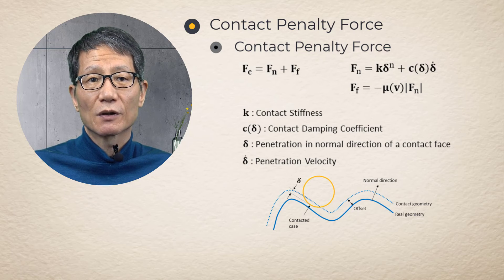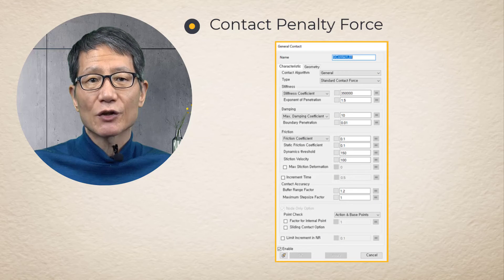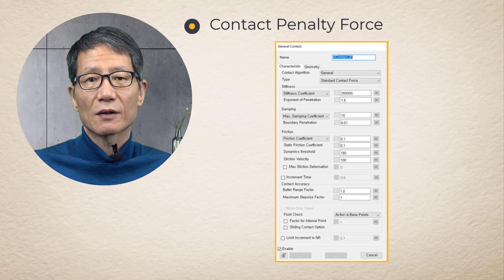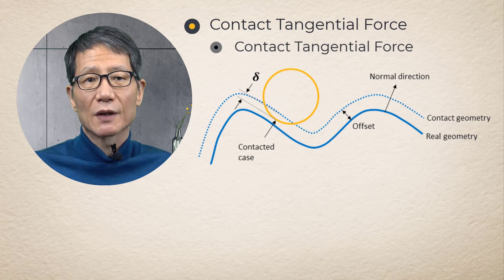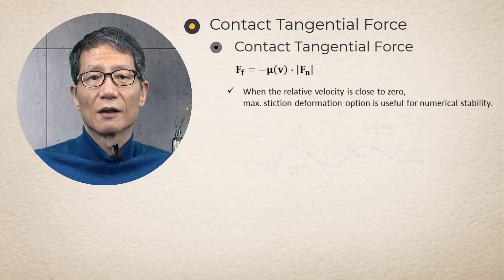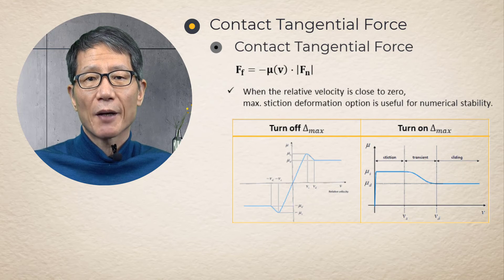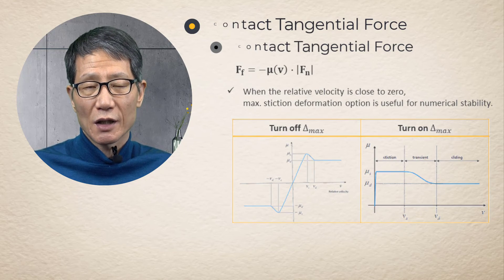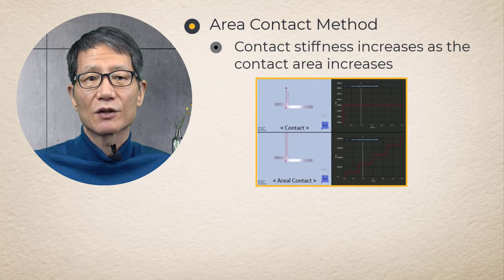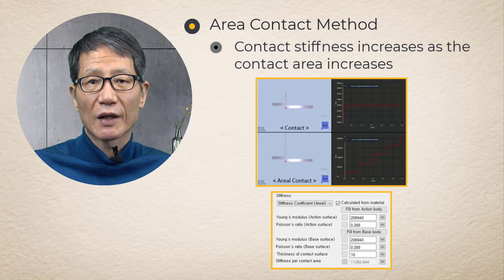The damping coefficient reaches at specified damping coefficient when the penetration depth is larger than boundary penetration specified in damping of contact characteristic tab. The tangential force is calculated by basically Coulomb friction method and the slip condition. The friction coefficient and slippage relationship is defined as in the figure depending on with and without the friction model. Areal contact method is used for a model whose contact stiffness must be increased as the contact area is increased.